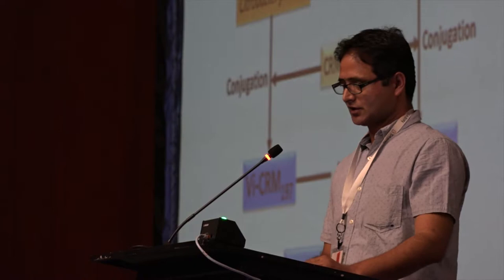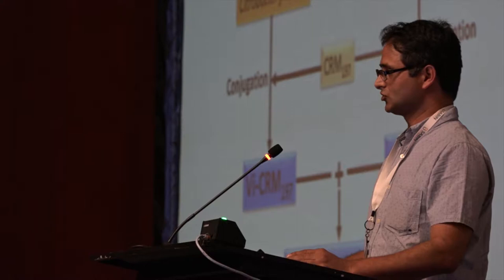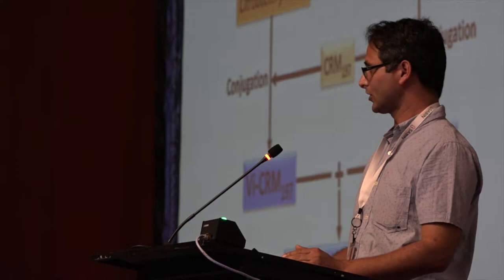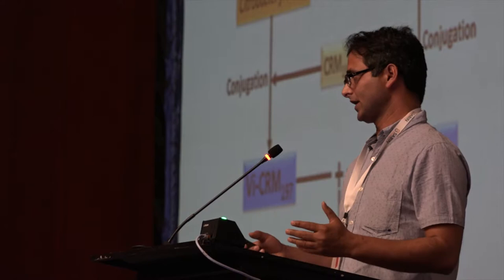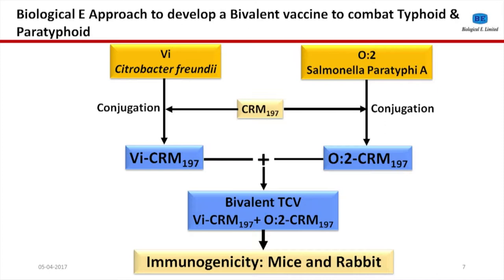This is the overall strategy used in collaboration with GBGH. It was a long development process, from the core technology from GBGH to process optimization for production of VI and O2. The VI was produced from a Citrobacter vector and conjugated with CRM-197 to generate VI-CRM monovariant. On the other side, O2 polysaccharide was produced from Salmonella Paratyphi A and conjugated to CRM to generate O2-CRM. These two monovariant vaccines were mixed together in equal proportions and used for immunization in different models.